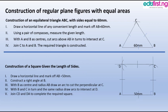To construct an equilateral triangle ABC with side equal to 60 millimeters: first, draw a horizontal line of a convenient length and mark off AB to be 60 millimeters. Use your compass to measure 60 millimeters on your meter rule. Use A as the center and draw an arc; likewise, put it on B to draw another arc.